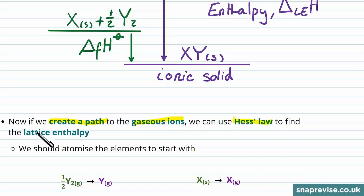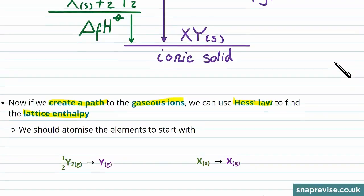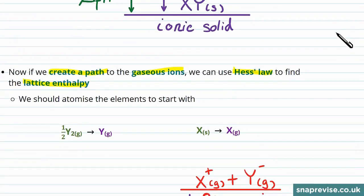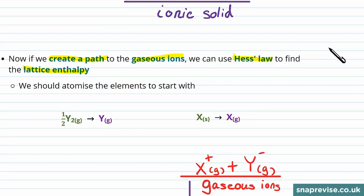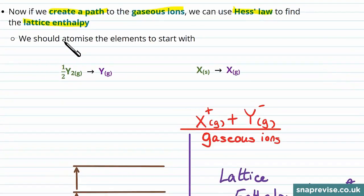At this stage if we can create a path between the gaseous ions and the elements in their natural state, then we can use Hess's law to find the lattice enthalpy, as we'll know two different routes between the ionic solid and the gaseous ions. So to start this process we should atomize the elements, as that makes them one step closer to being the gaseous ions.